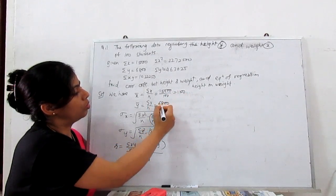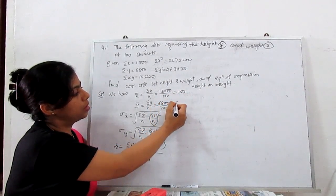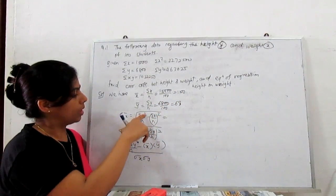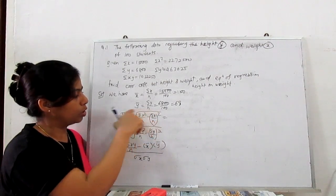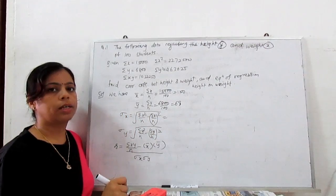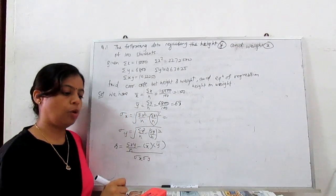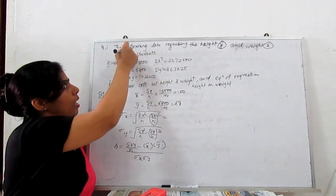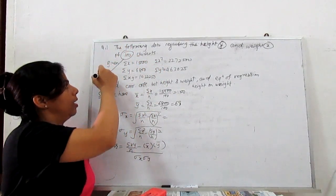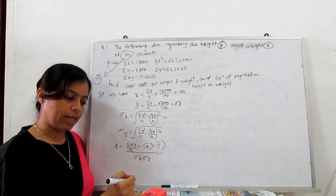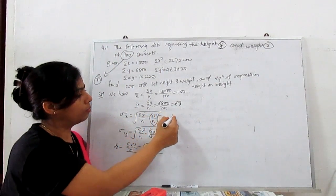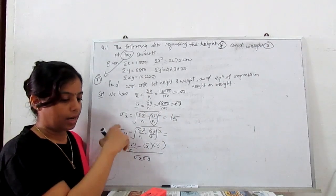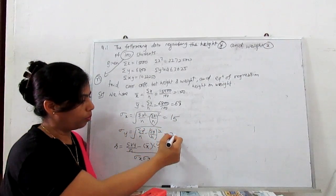The mean ȳ = 6,800 / 100 = 68. For the standard deviations, using the formula σ_x = √(Σx²/n − (Σx/n)²), substituting the given values gives σ_x = 15. Similarly, substituting all values for y gives σ_y = 2.5.